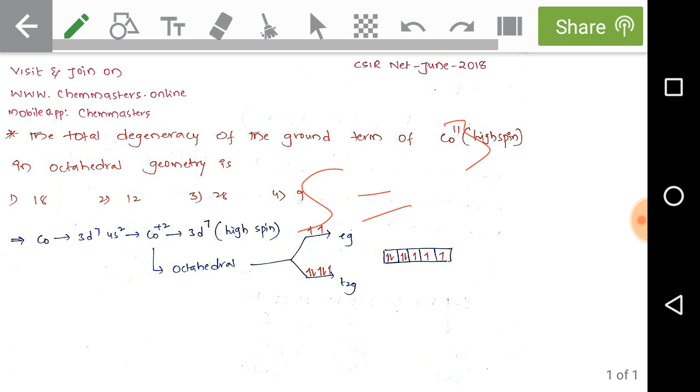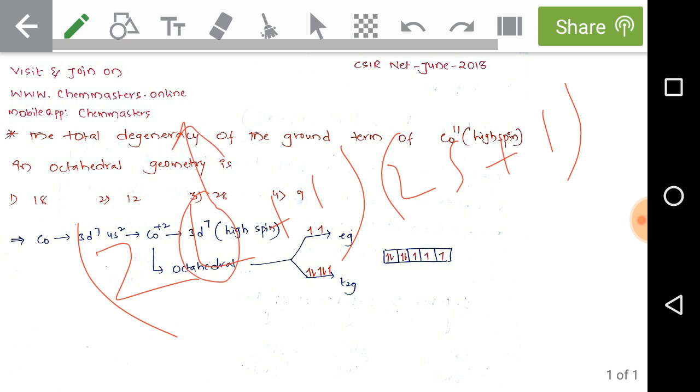To calculate the total degeneracy of the ground term of the cobalt(II) high spin octahedral complex, we have a simple formula: (2L + 1) × (2S + 1). Just substitute the L value, that is 3, then substitute the S value, that is 3 by 2. By solving we can get 7 × 4 equals 28.